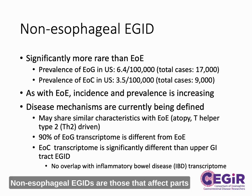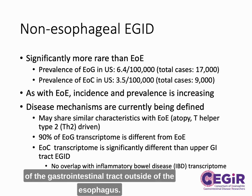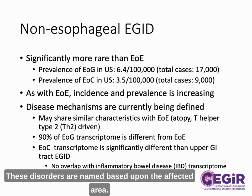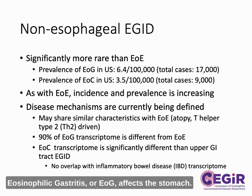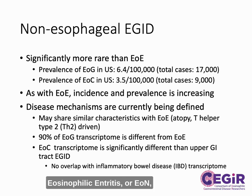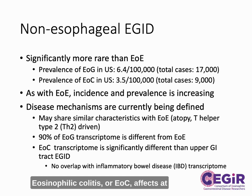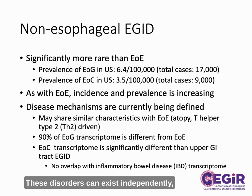Non-esophageal eGIDS are those that affect parts of the gastrointestinal tract outside of the esophagus. These disorders are named based upon the affected area. Eosinophilic gastritis, or EOG, affects the stomach. Eosinophilic enteritis, or EON, affects the small intestine. Eosinophilic colitis, or EOC, affects at least one part of the colon. These disorders can exist independently, but can also occur together.